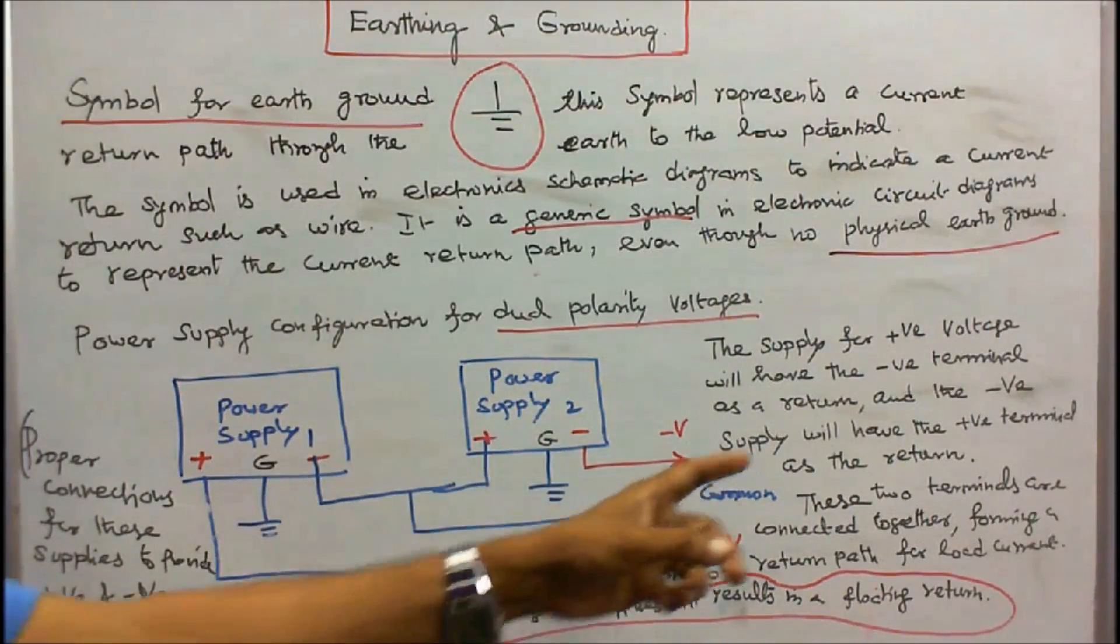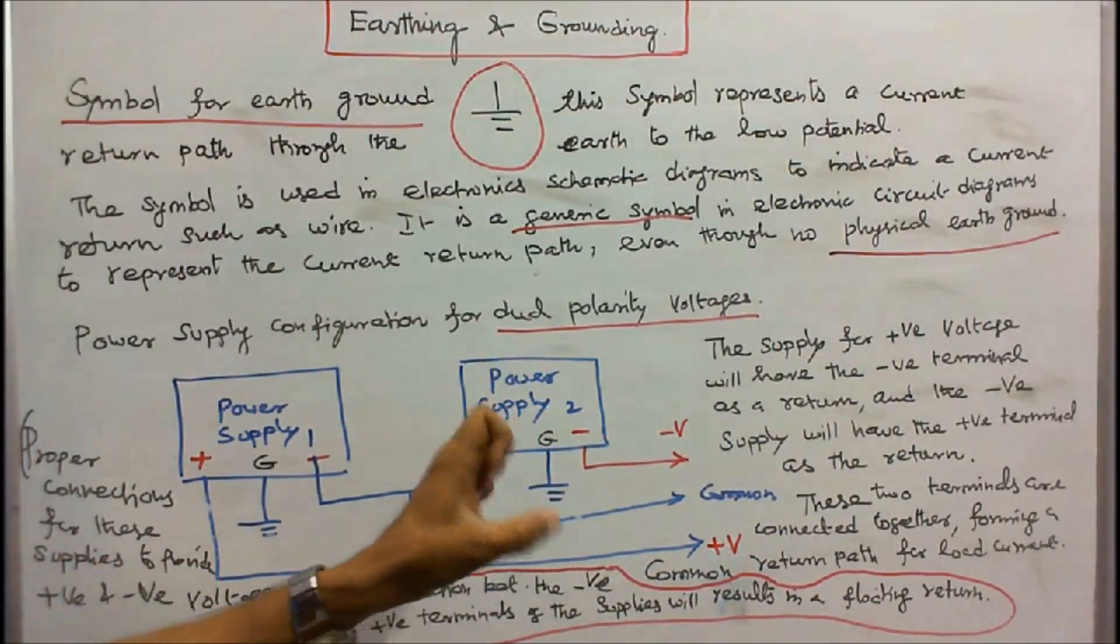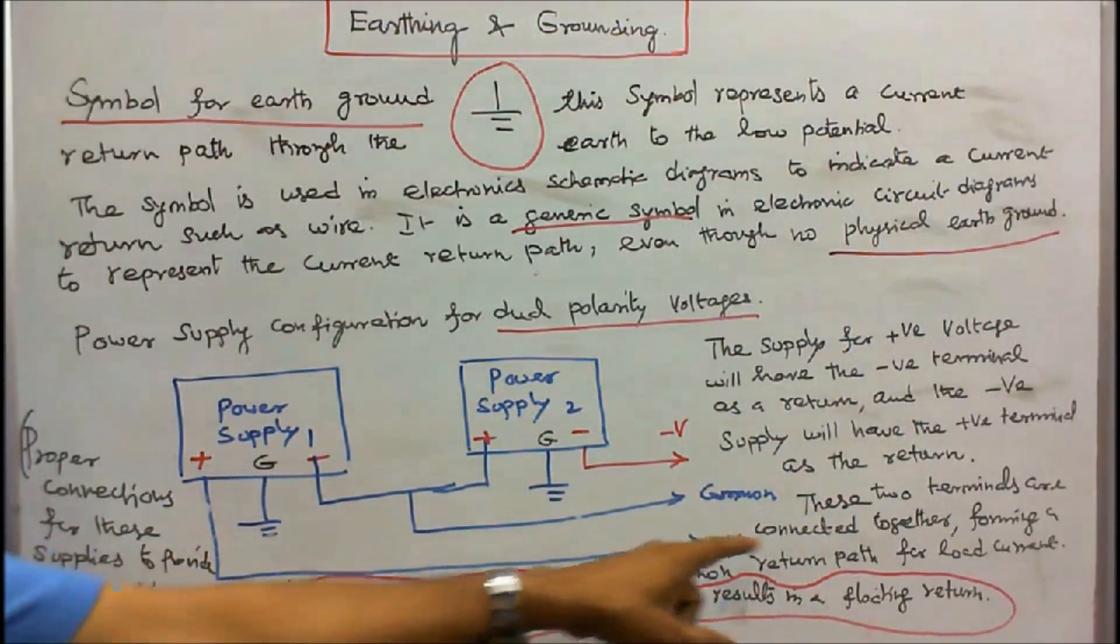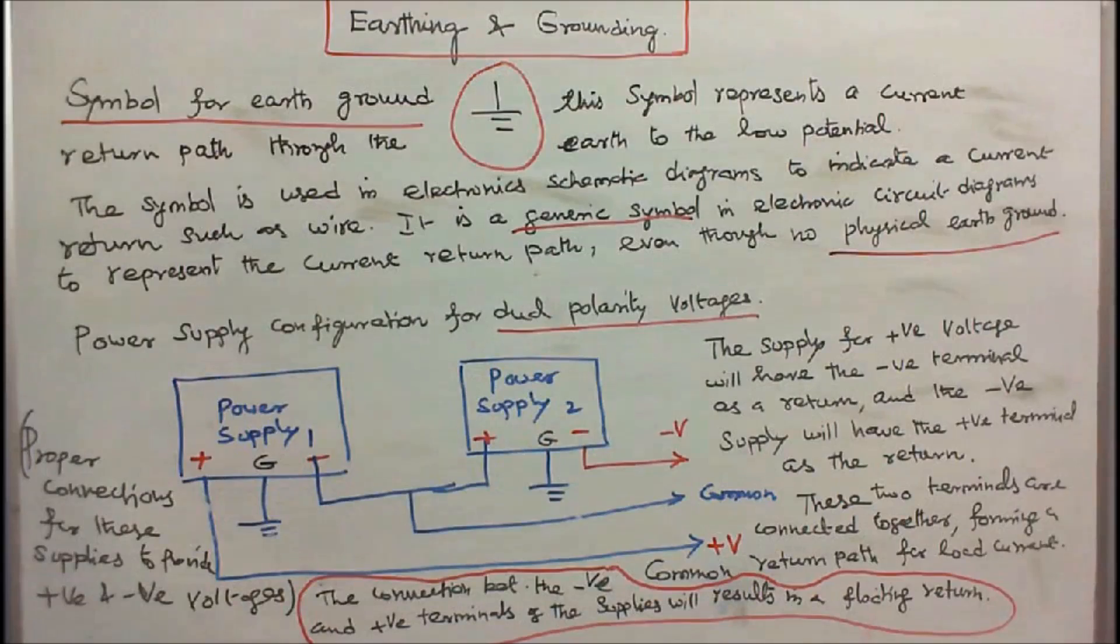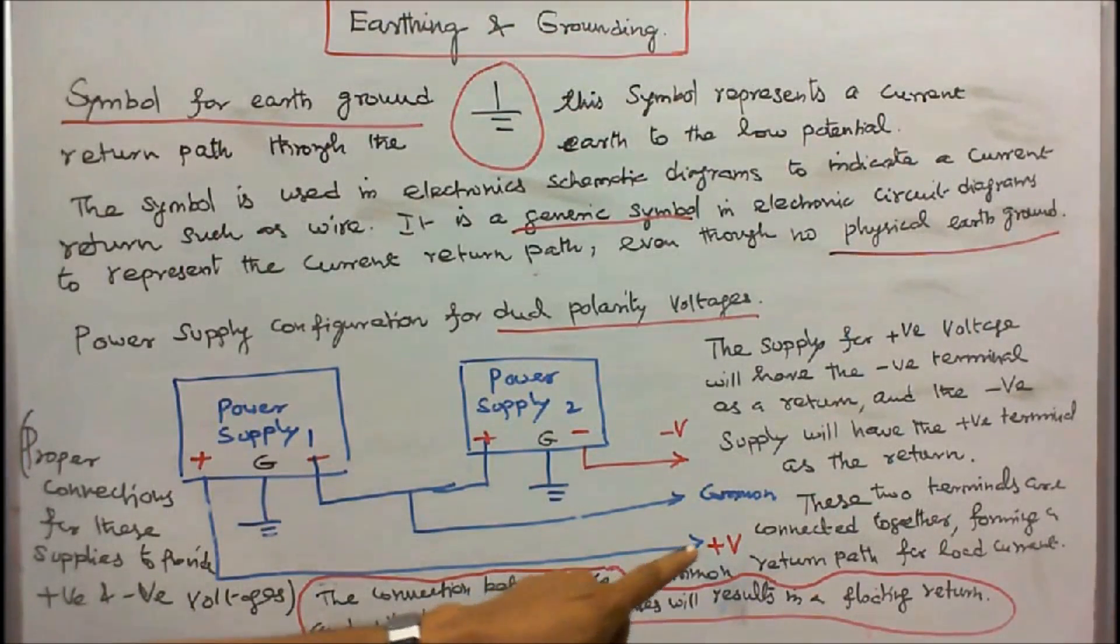These two terminals are connected together forming a common return path for load current. Proper connection for these supplies to provide positive and negative voltages. The connection between the negative and positive terminals of the supplies will result in a floating return.